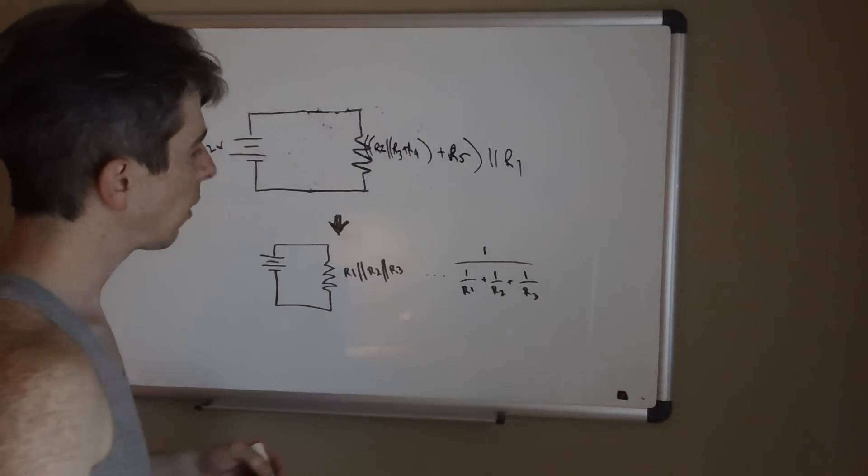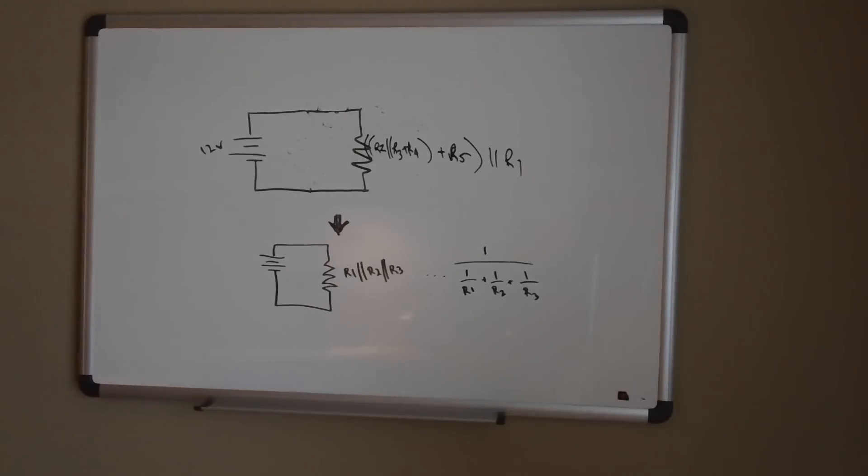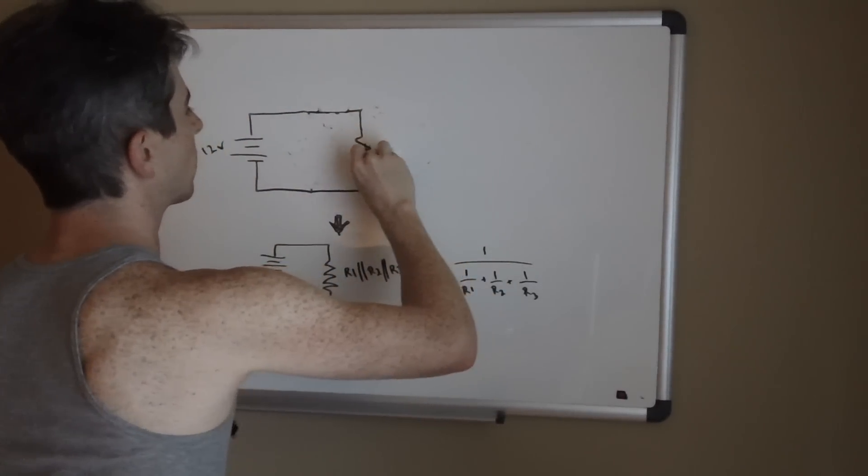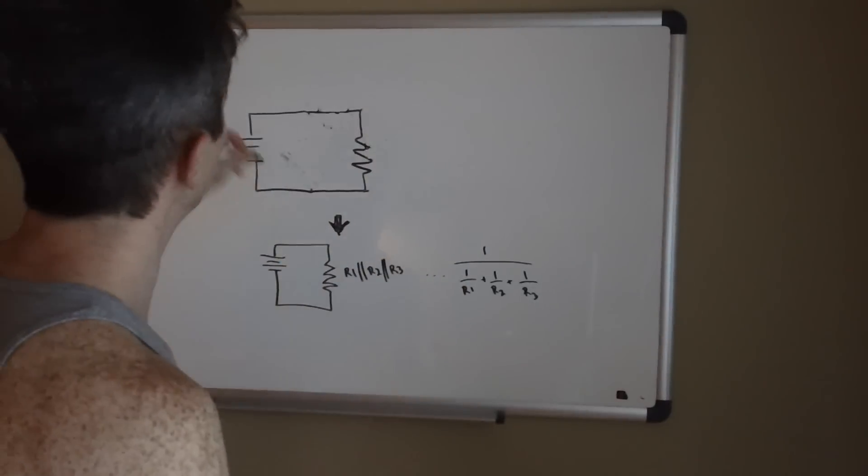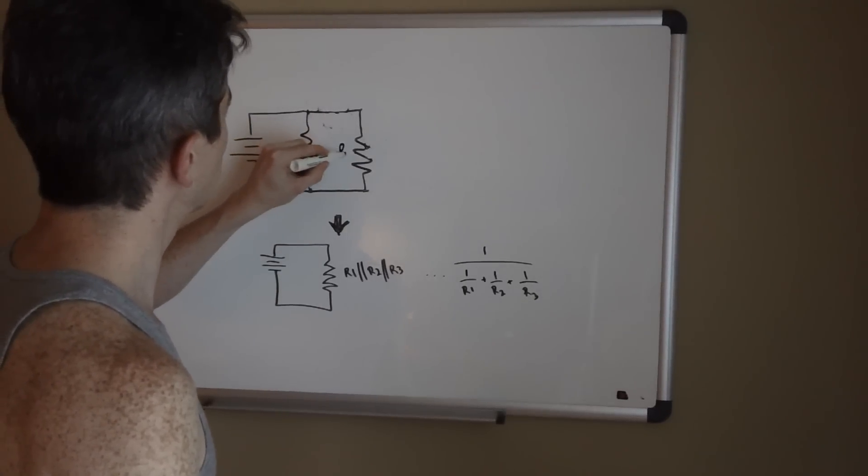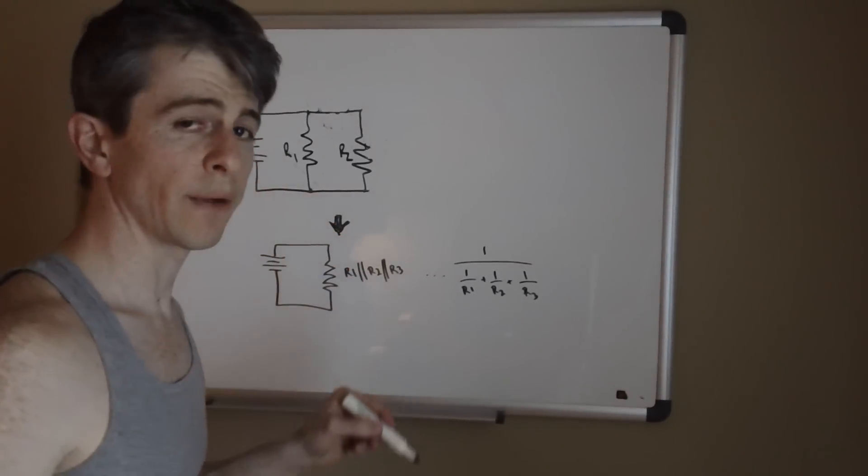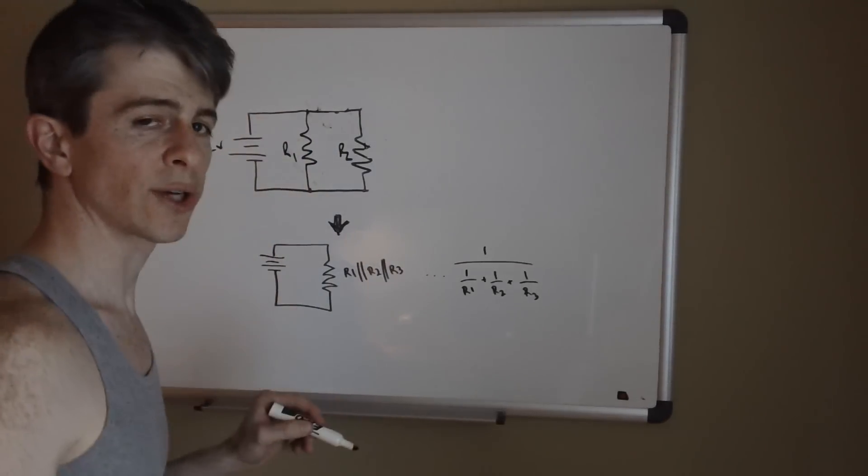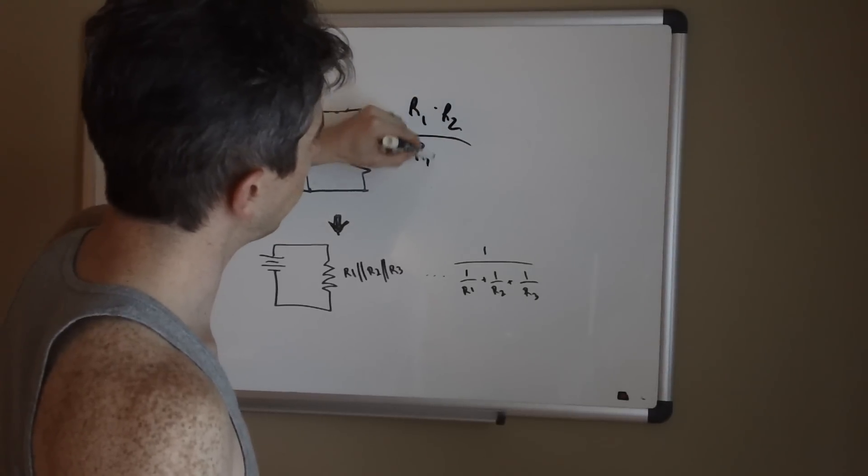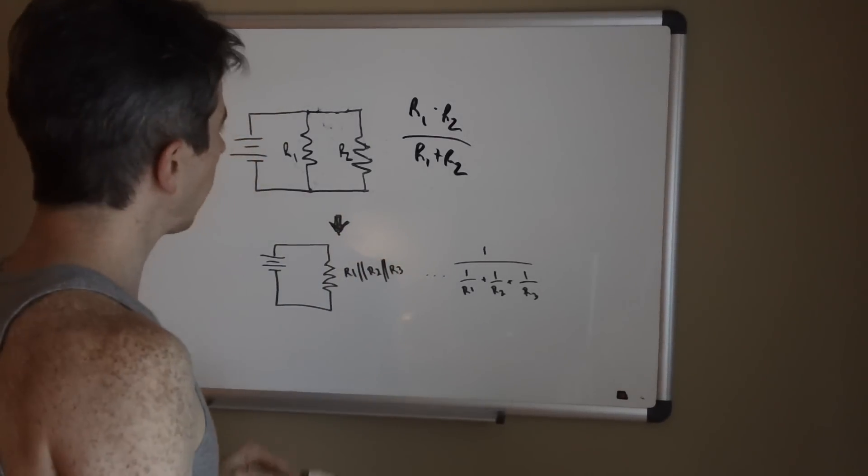Now one shortcut when you only are dealing with, let's say, two branches: you could of course always go this route to combine them, but there's also the expression you may have heard, product over sum. So what you can do if you've only got two branches you're trying to combine, you can take their product, so R1 times R2 over their sum R1 + R2, and this will yield the same thing as going through this exercise if you're only dealing with two.